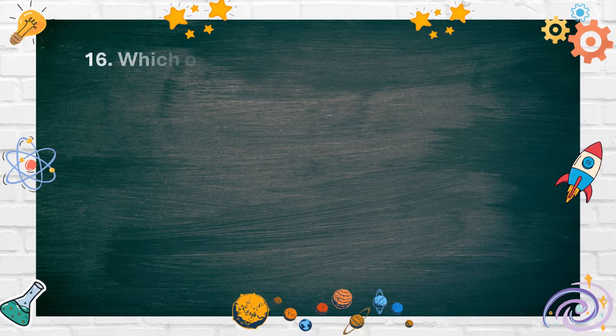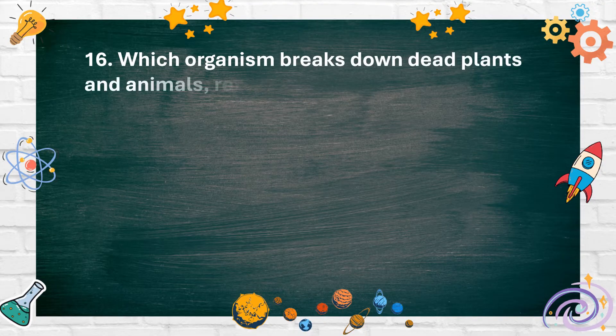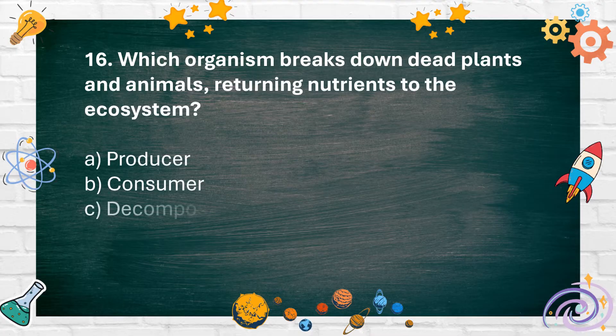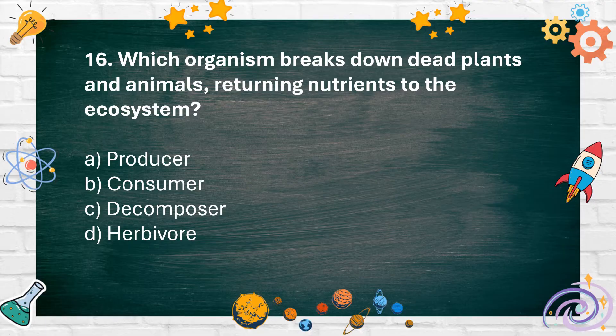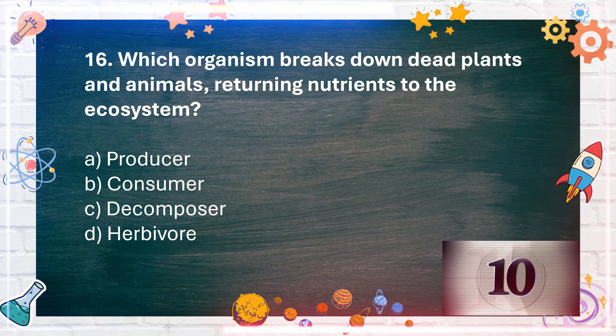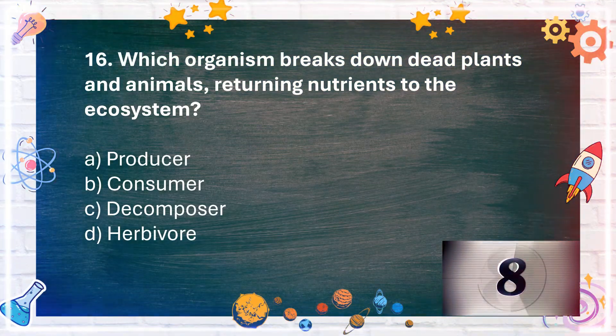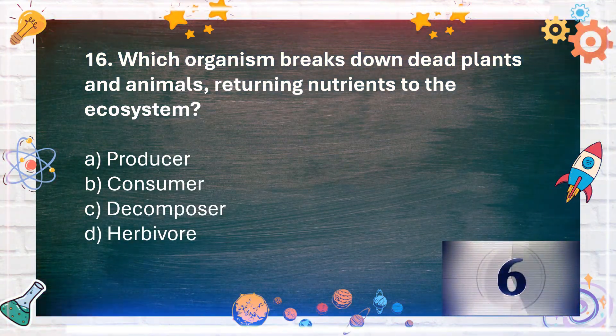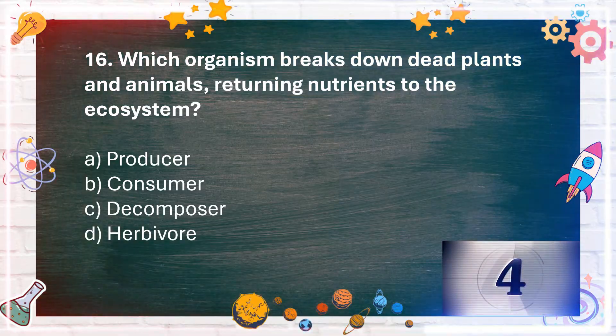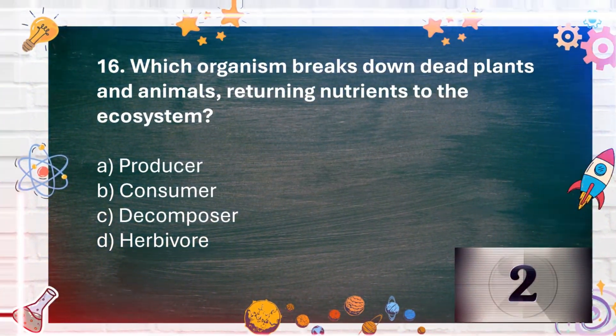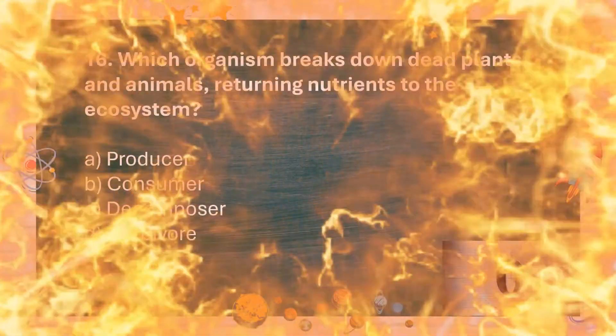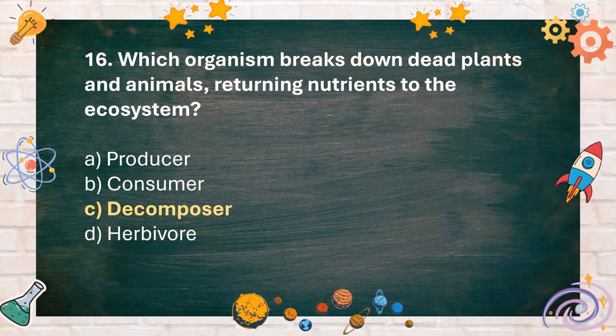Number 16: Which organism breaks down dead plants and animals, returning nutrients to the ecosystem? A. Producer, B. Consumer, C. Decomposer, D. Herbivore. The answer is C. Decomposer.